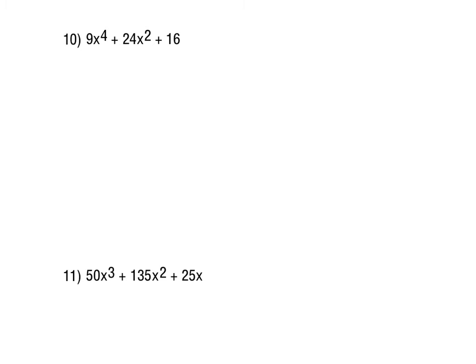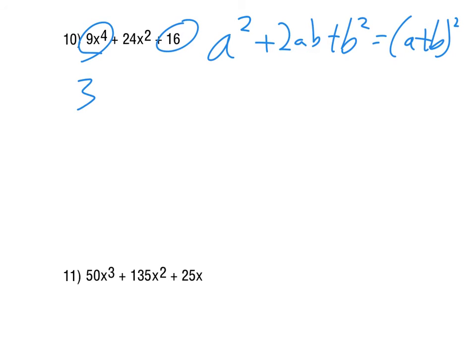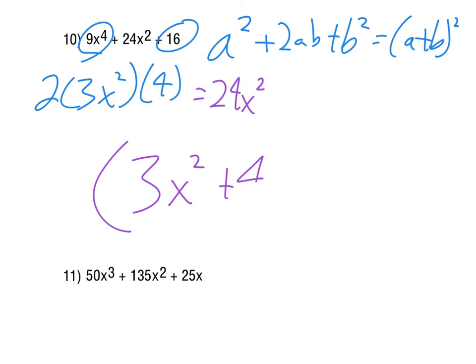For number 10, there are no common factors. It looks like it could be a special pattern with 9x to the 4th and the 16. So again, that would be that perfect square trinomial pattern, which looks like this. So if it fits that pattern, then it factors as a plus b squared. Again, the way we check that is we square root the 9x to the 4th and the 16. That gives us 3x² and 4. If we multiply that together and double it, and we get the 24x², then yes, it is that perfect square trinomial pattern, which of course does work out in this case. So it just factors as the 3x² plus 4 squared.